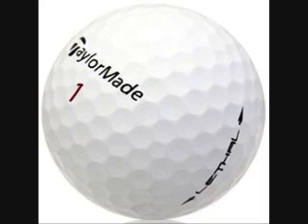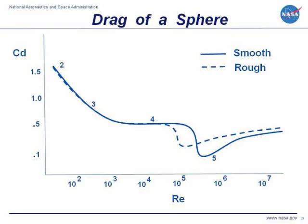Adding small dimples to the surface of golf balls greatly enhances their aerodynamics. Small dimples increase both drag and lift, with more lift produced than drag. However, dimples lower the coefficient of drag below that of a smooth sphere once the Reynolds number passes 100,000.